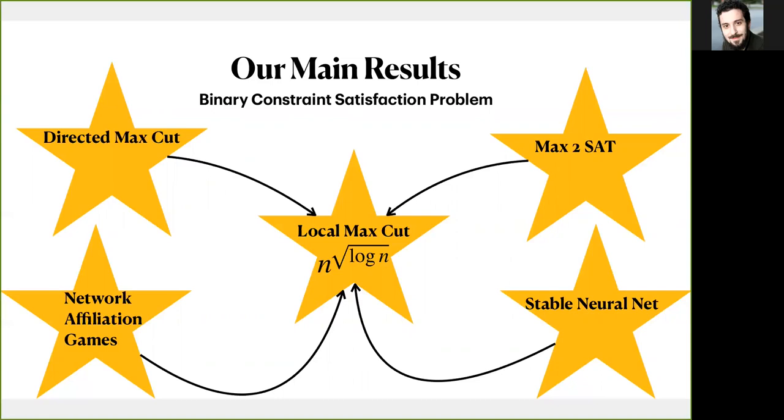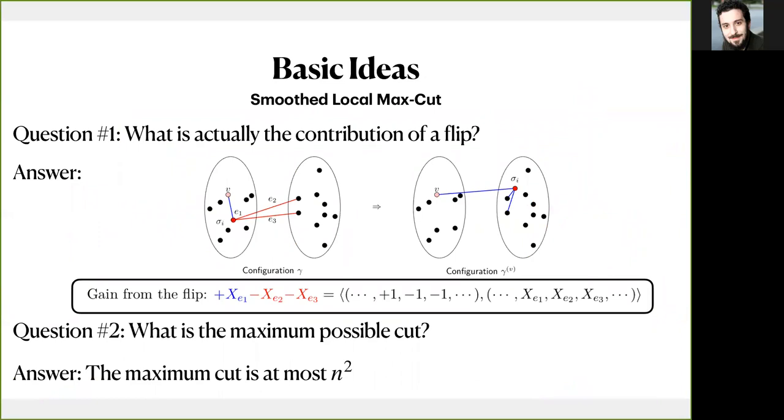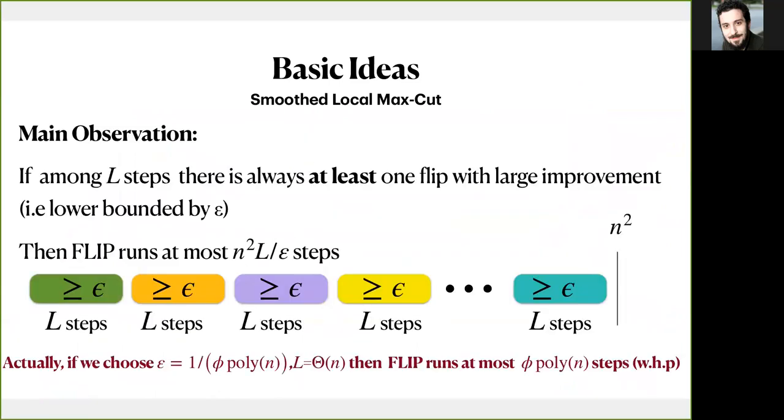Now let's start our analysis with a fundamental question. What is actually the contribution of a flip? The improvement of a flip is the sum of the edges that we earn minus the sum of the edges that we lose because of a flip. Also notice that since the weights are bounded by one, the maximum possible cut is at most n squared. Thus, if we could show that in every block of l steps, for example, there was at least one large improvement, let's say at least epsilon, something inverse polynomial, for example, then the algorithm would run at most n squared times l over epsilon steps, where if epsilon was inverse polynomial and l was something linear, that corresponds to a smooth polynomial running time.